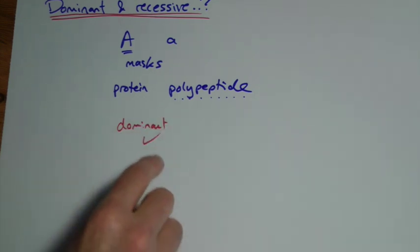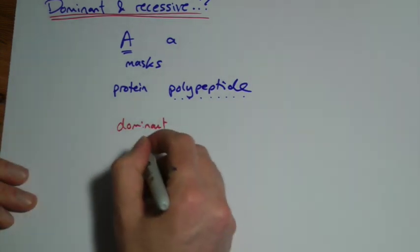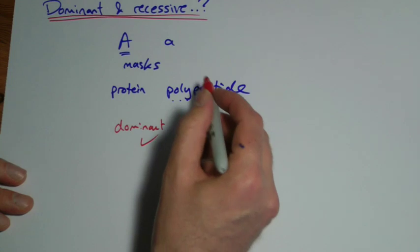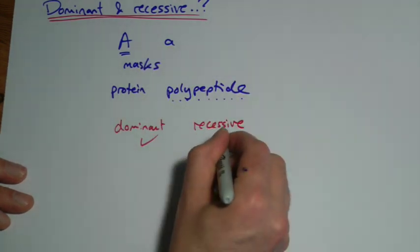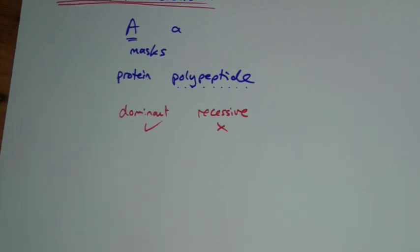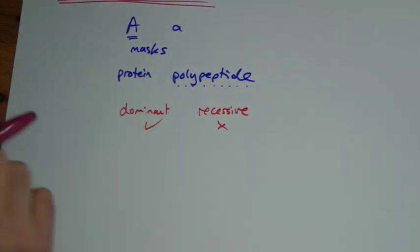But for the moment, we'll just use this idea that the dominant one makes a protein that works in the right way. And the recessive one makes a protein that doesn't work. Let's imagine, let's just make up an example.